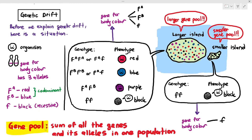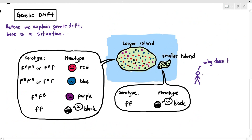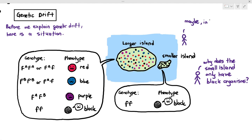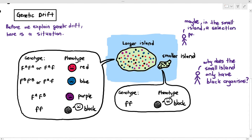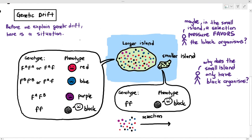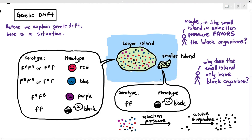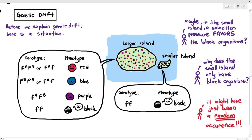An important question: why does the larger island have all four color varieties, but the small island only has black organisms? Some students might say there was a selection pressure on the smaller island that favored black organisms. That's a possible explanation, but there is also another possibility — it may have just been a random occurrence. And that random possibility is known as genetic drift.